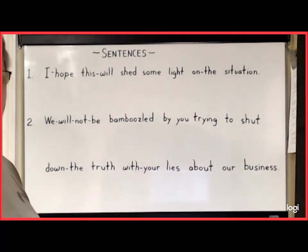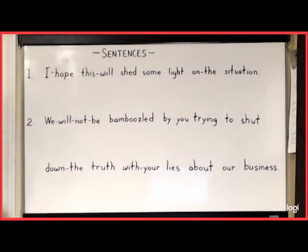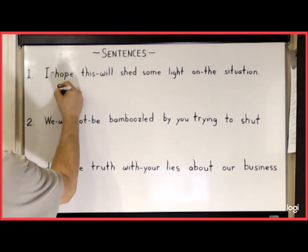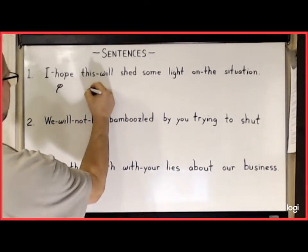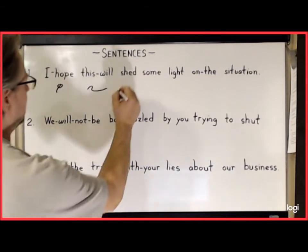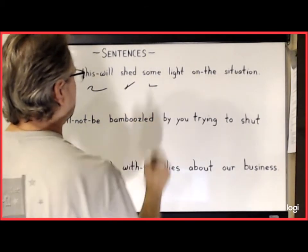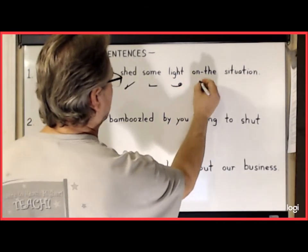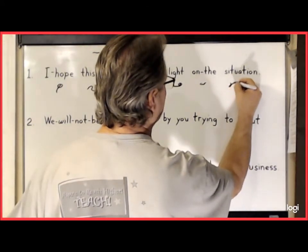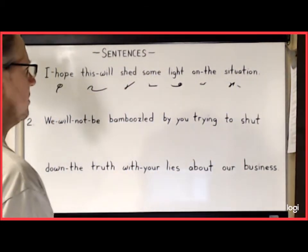And now on to a set of sentences. For number one: 'I hope this will shed some light on the situation.' The phrase 'I hope' is the large circle with a P through the middle. 'This will' is T-H-S and L. 'Shed' is S-H-E-D. 'Some' is S-M. 'Light' is L and long I. 'On the' is O-N and T-H. And 'situation' is S-I-T and S-H for the shun. Then a forward slash for the period.